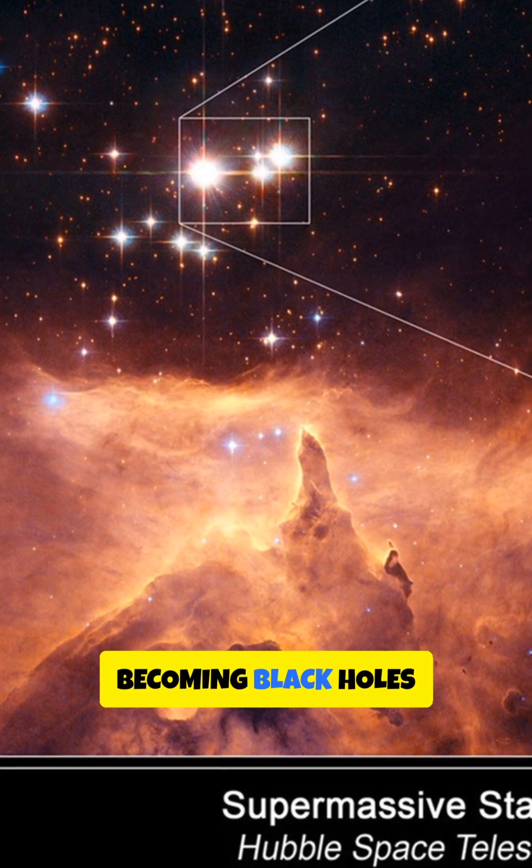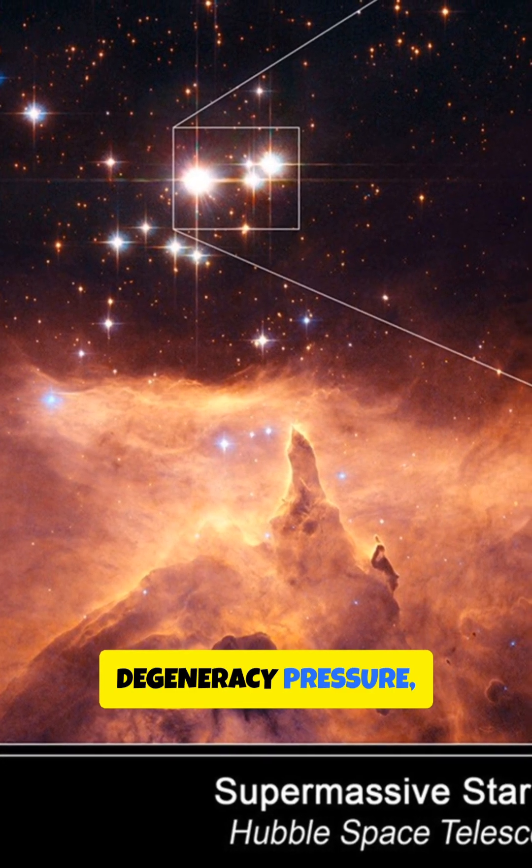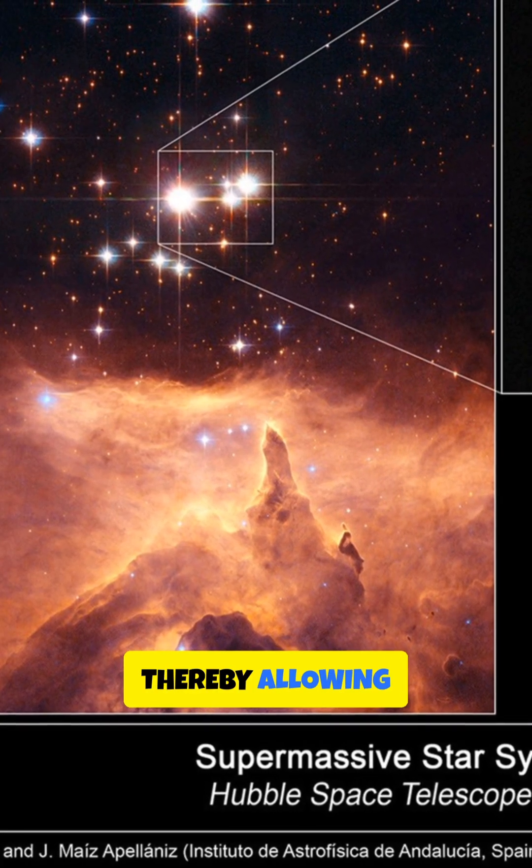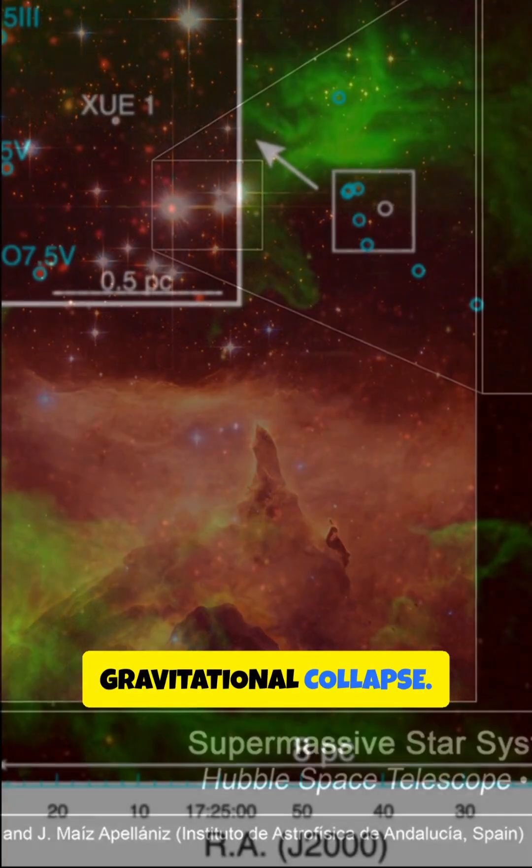Neutron stars avoid becoming black holes due to neutron degeneracy pressure, a quantum effect that prevents neutrons from occupying the same quantum state, thereby allowing them to resist gravitational collapse. Isn't it wild?